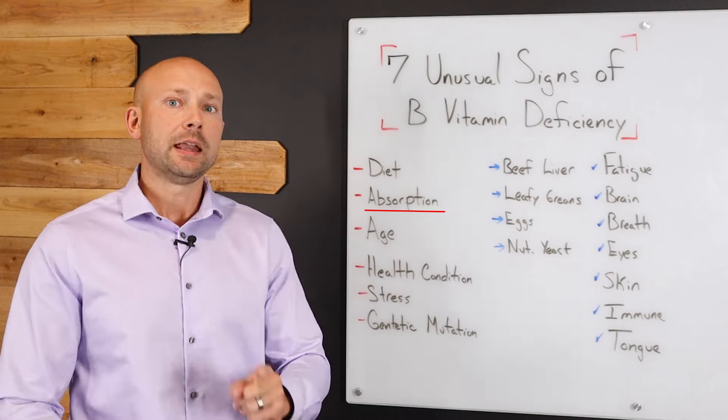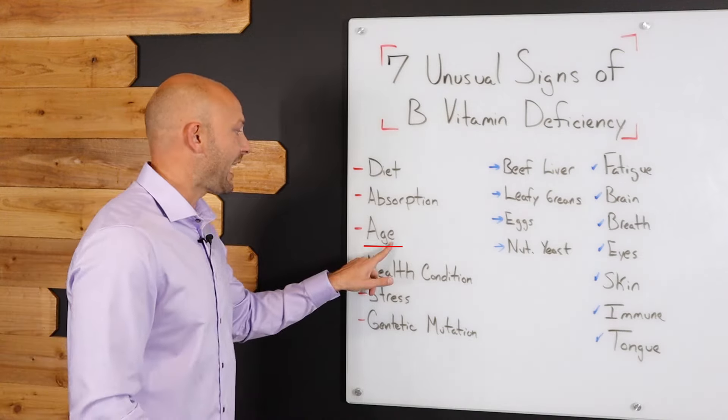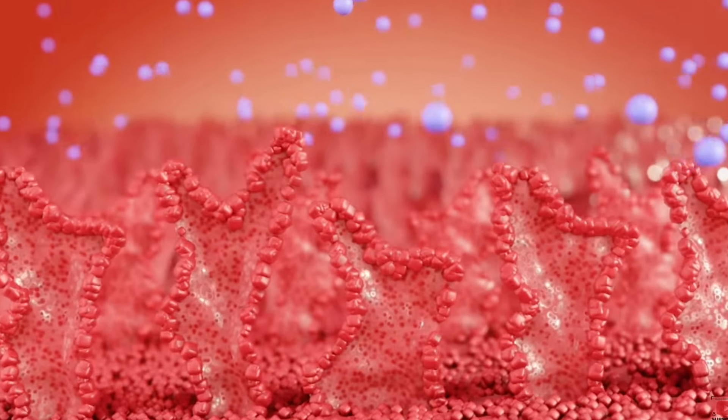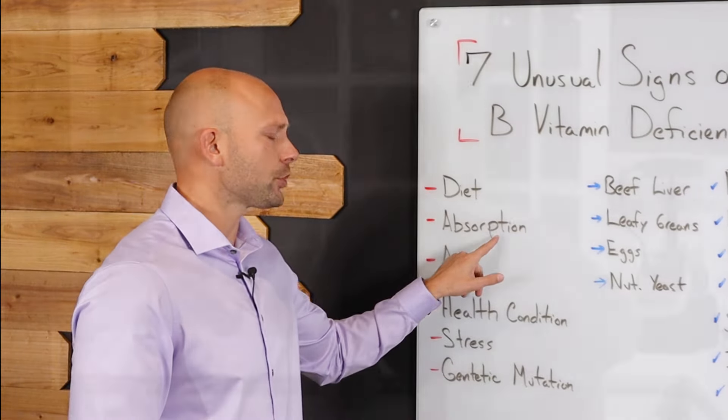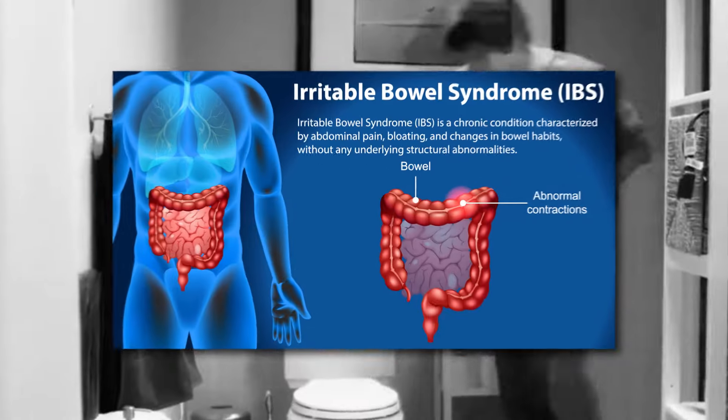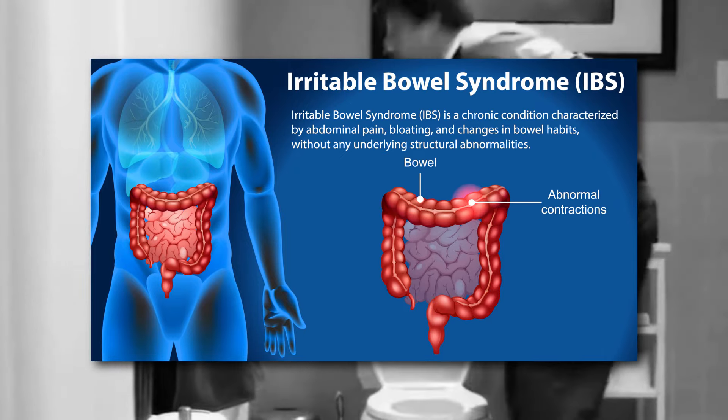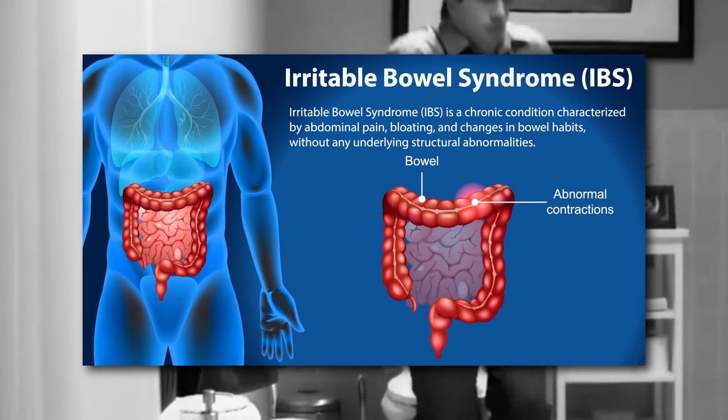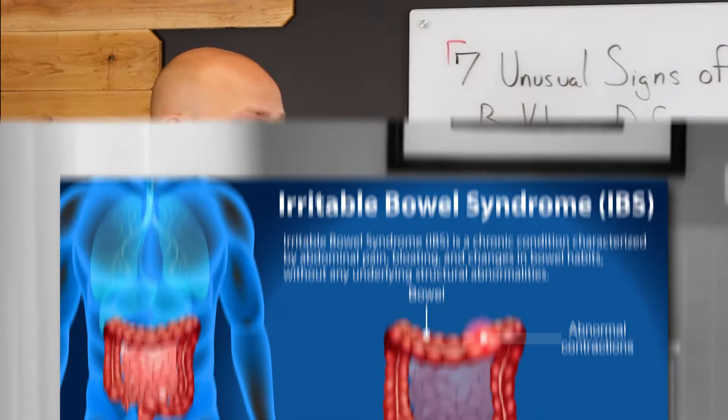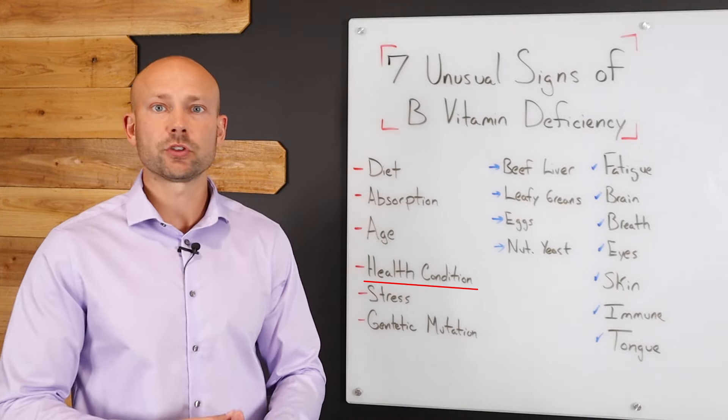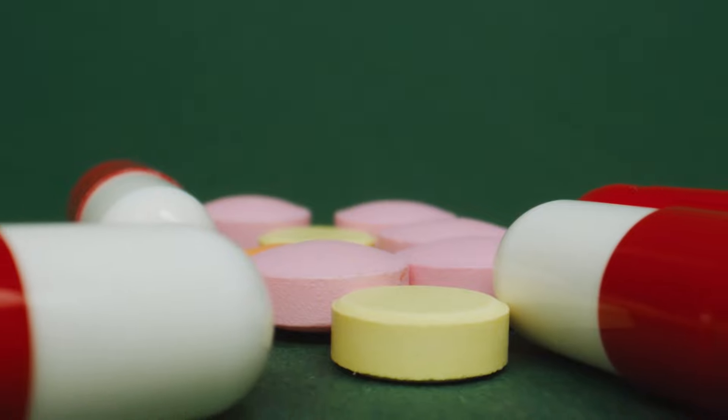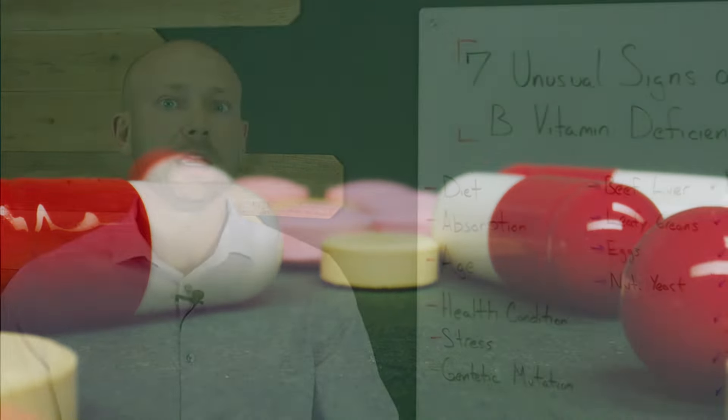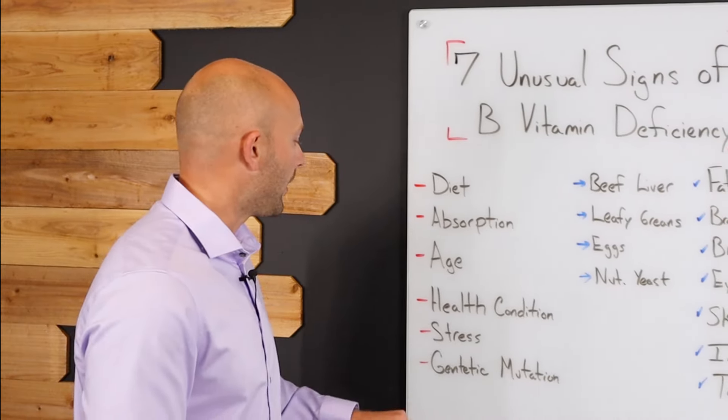Absorption can be an issue. Now, this is something that actually happens with age. The older you get, the harder it can become to absorb B vitamins properly, but also absorption in the way that maybe you're suffering from IBS or some sort of gastrointestinal issue. And as a result of that, you're just not absorbing anything well. Now, the other thing we have to look at is health conditions. If you're suffering from a health condition, it could be stripping you of B vitamins. And also maybe a medication associated with that health condition is robbing you of B vitamins as well.